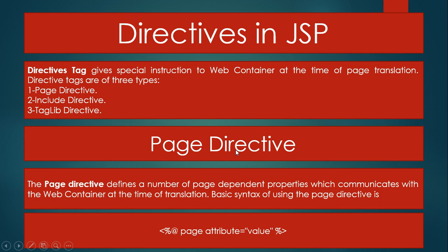First we discuss about the page directive. The page directive defines a number of page-dependent properties which communicate with the web container at the time of translation. The basic syntax of using the page directive is: you write the angle bracket, percentage symbol, then at the rate (@) page, and write the attribute and value of the attribute.